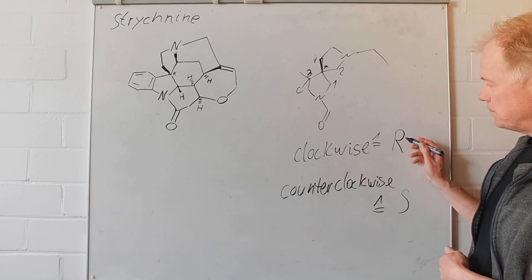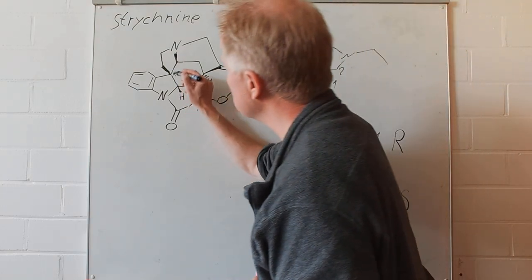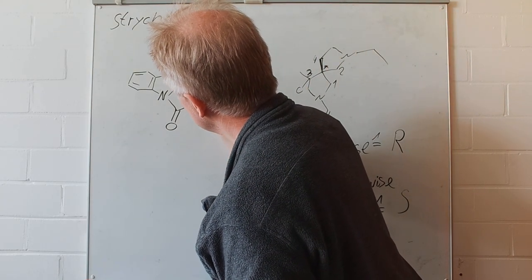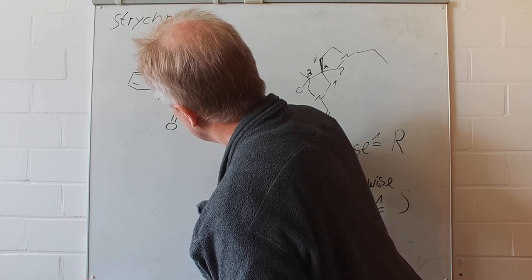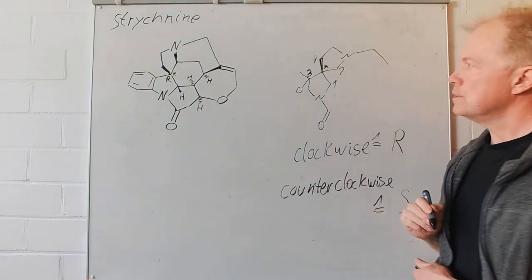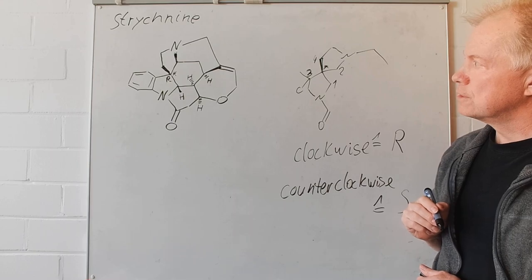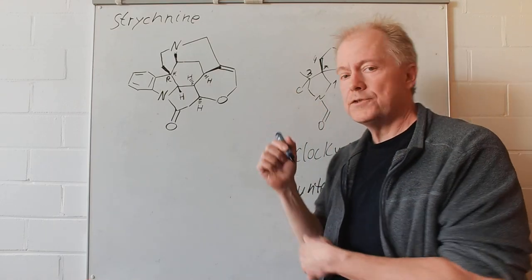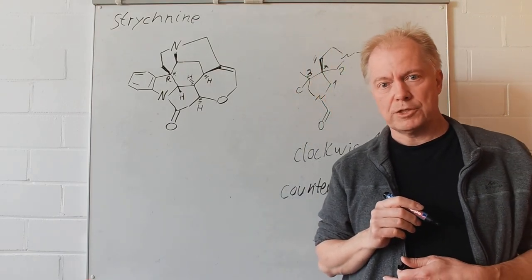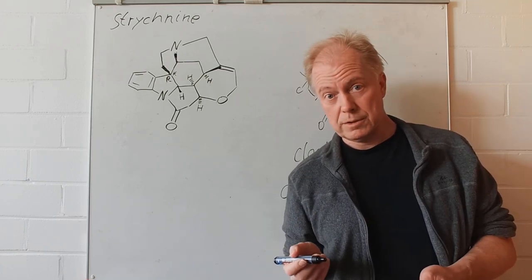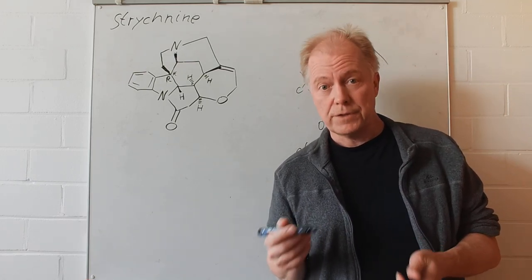So, we have an R for the center and we can introduce the R here. The other five stereogenic centers are much easier. Please try it by yourself. Thank you for listening.